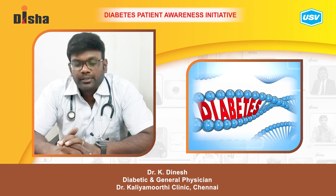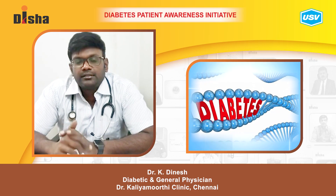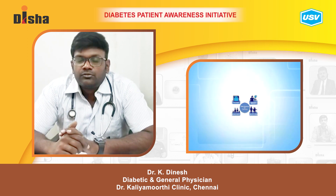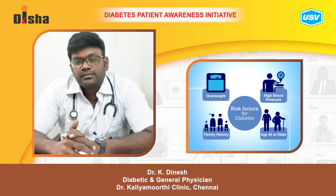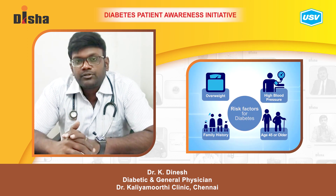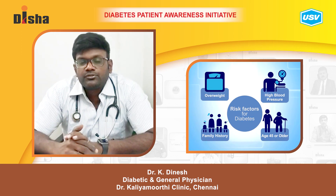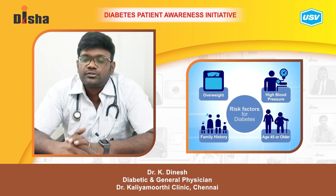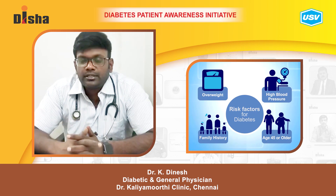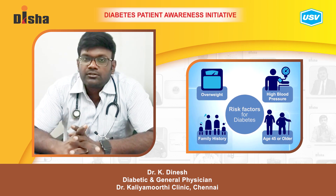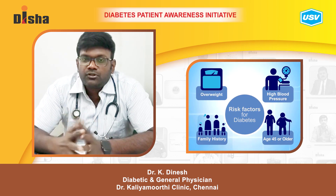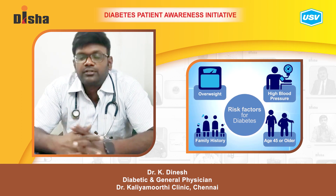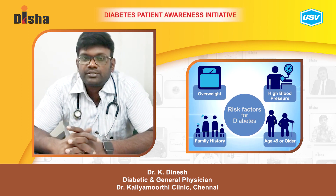Today my topic is: is diabetes a family disorder? Diabetes occurs because of a lot of factors — food, genetic materials, genetic influence, and environmental influence. It is not because of one single reason; it is a combination of a set of reasons which leads to diabetes.